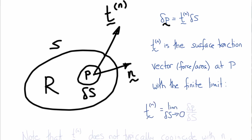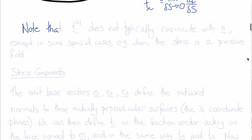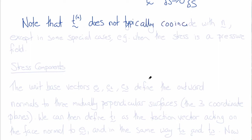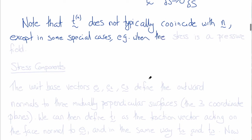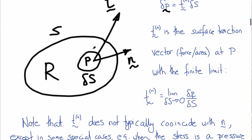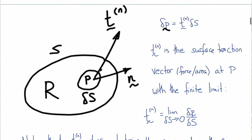At every point on the surface we can define this traction vector field. Notice that in general T_N does not typically coincide with N, except in special cases such as when the stress is a pressure field, in which case all the tractions would be normal to the surface. Normally, a component of the tractions is also tangent to the surface — there are components of T that are parallel to N and components that are tangential to N.